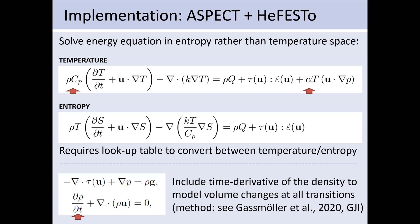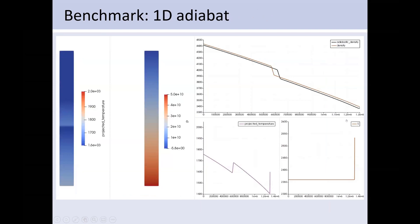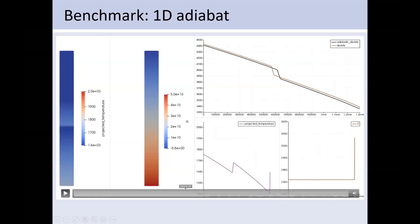Let's look at the results in ASPECT to see if this fixes the problem. Recall that on the left we had the model with all the wrong temperature jumps across the phase transition. On the right is the same model using the new method, solving the equation for entropy. In this case we get the correct temperature jump across the phase transition, both upwards and downwards. We can also look at benchmarks for this new formulation.